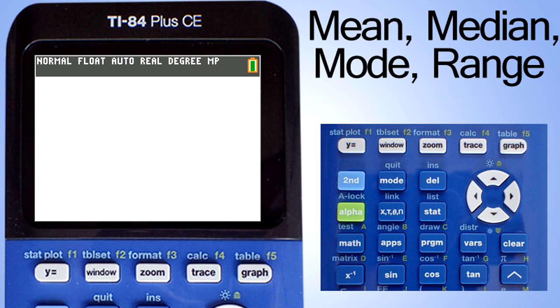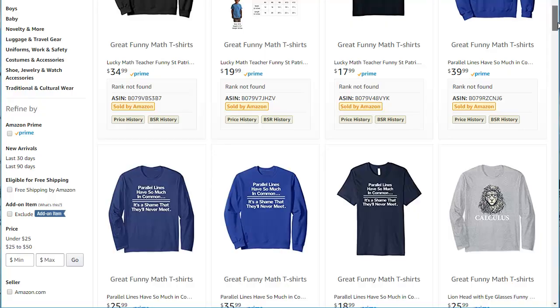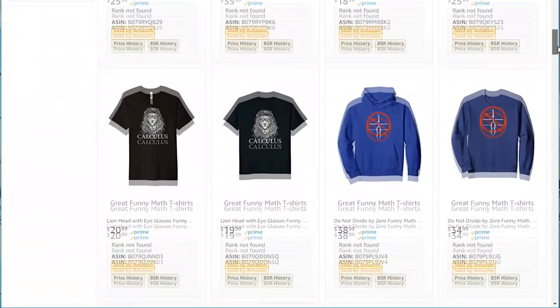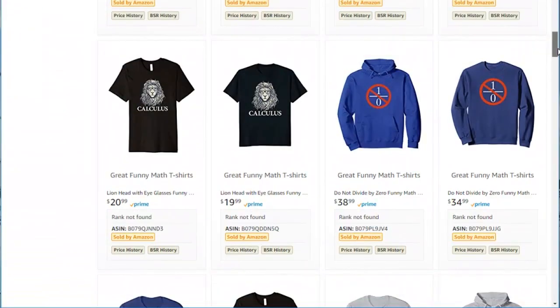Hi, this is Rob. We're going to calculate the mean, median, mode, and range on the TI-84 Plus CE graphing calculator. Don't forget to check out my math t-shirts on Amazon. I will leave a link in the description below.